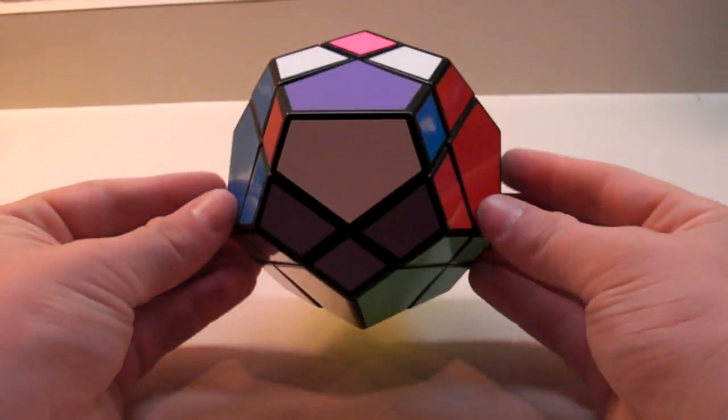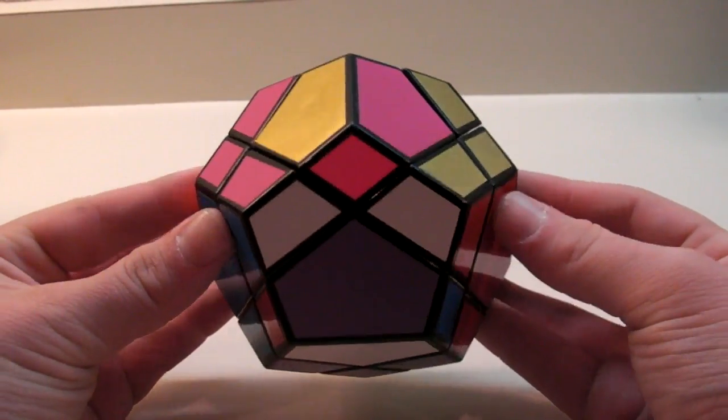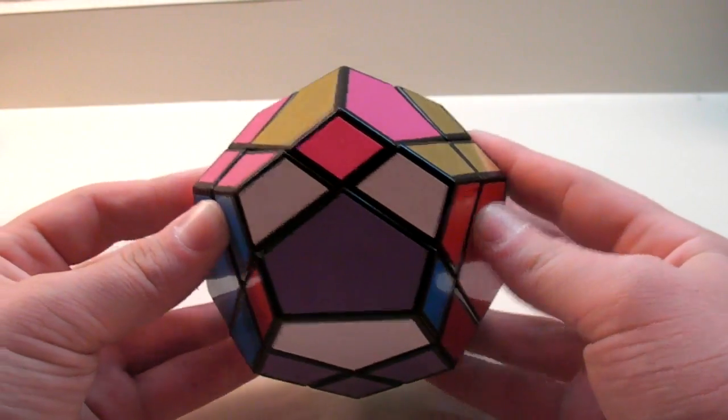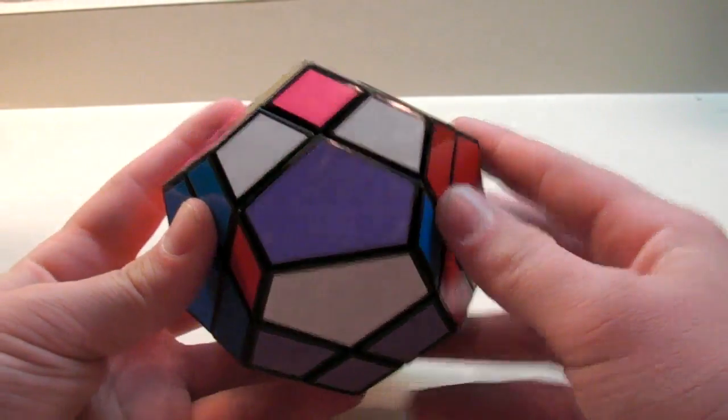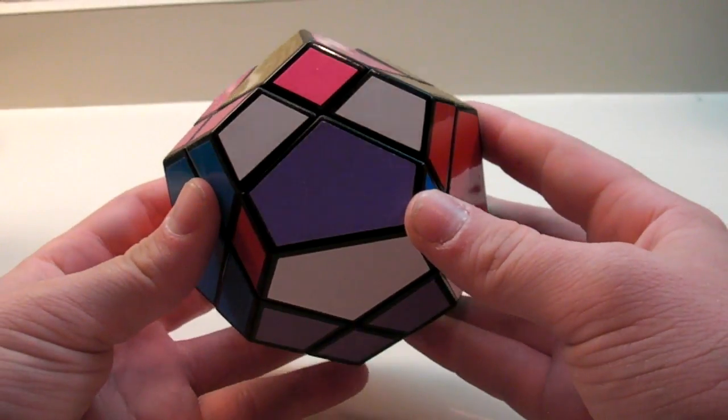This is the last step in solving your Skewb Ultimate, the final video in the tutorial. This final step is going to be rotating the center pieces so that they all are correctly oriented.